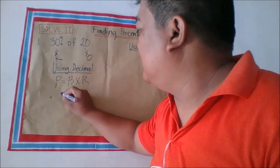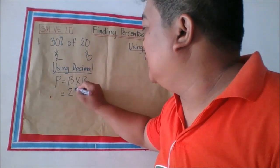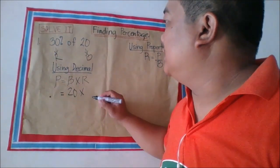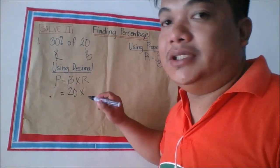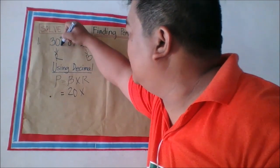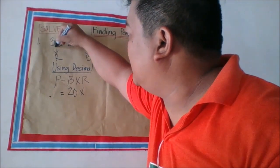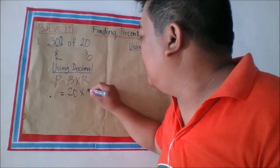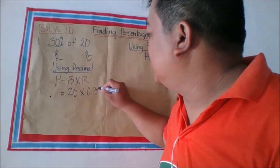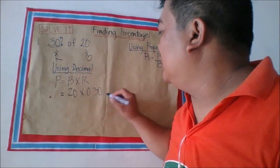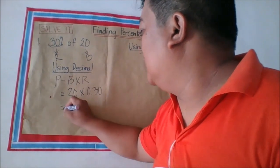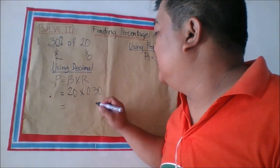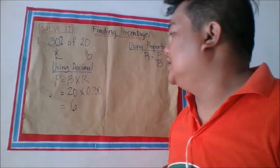Using decimals: base is 20 times 30%. 30% will be changed into a decimal by moving two decimal places to the left, so 30% is equal to 0.30. Therefore, 20 times 0.30 is 6.